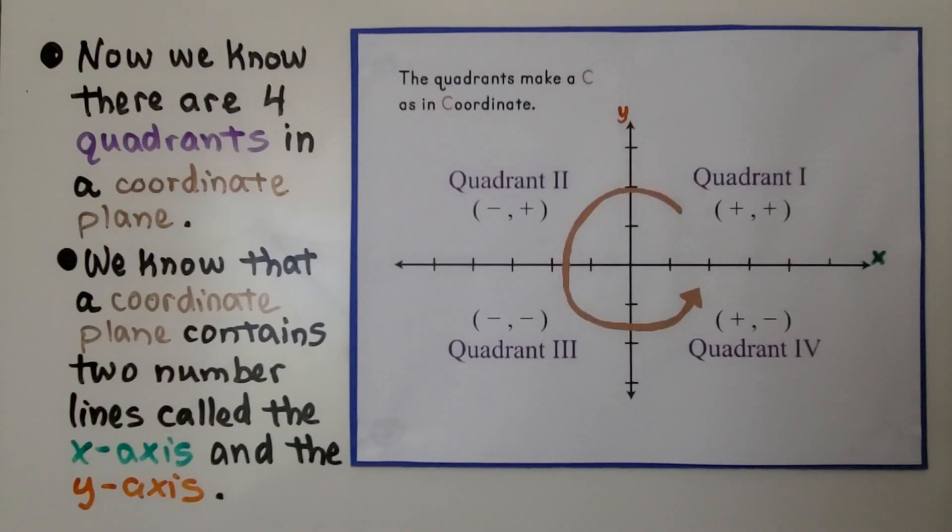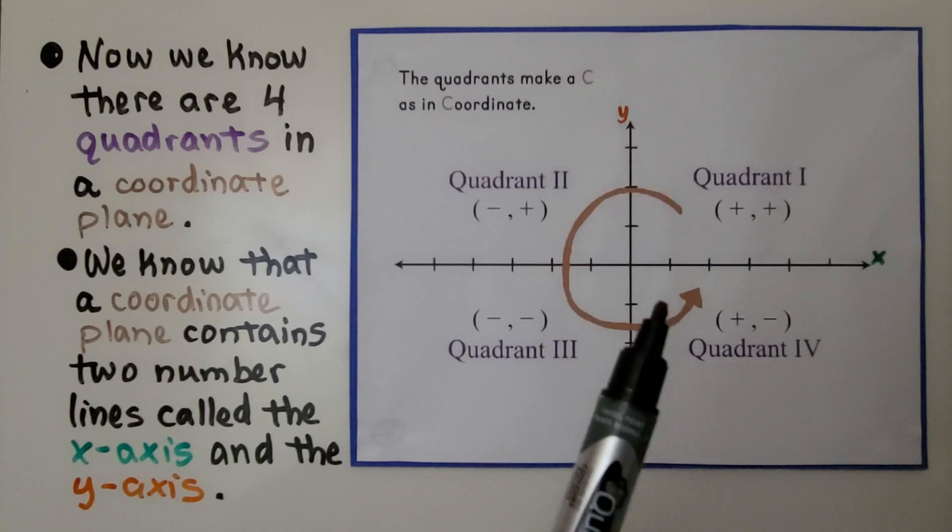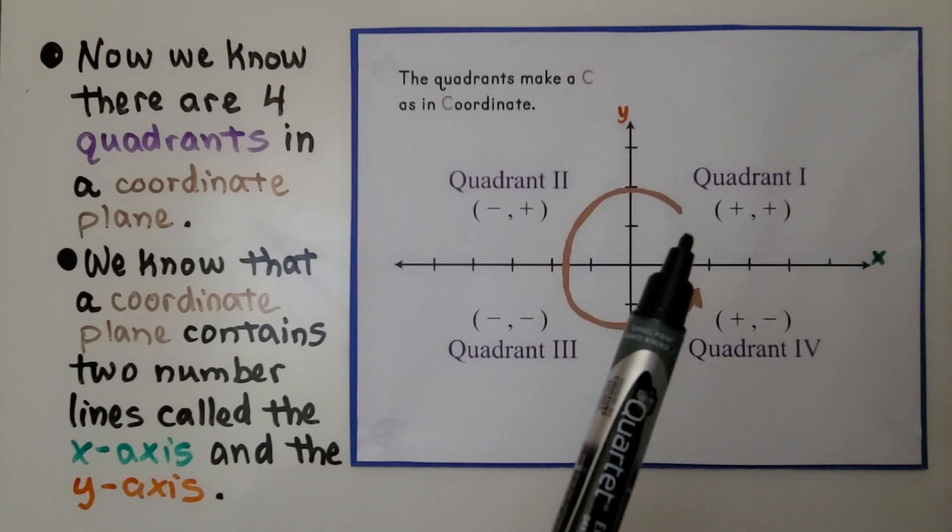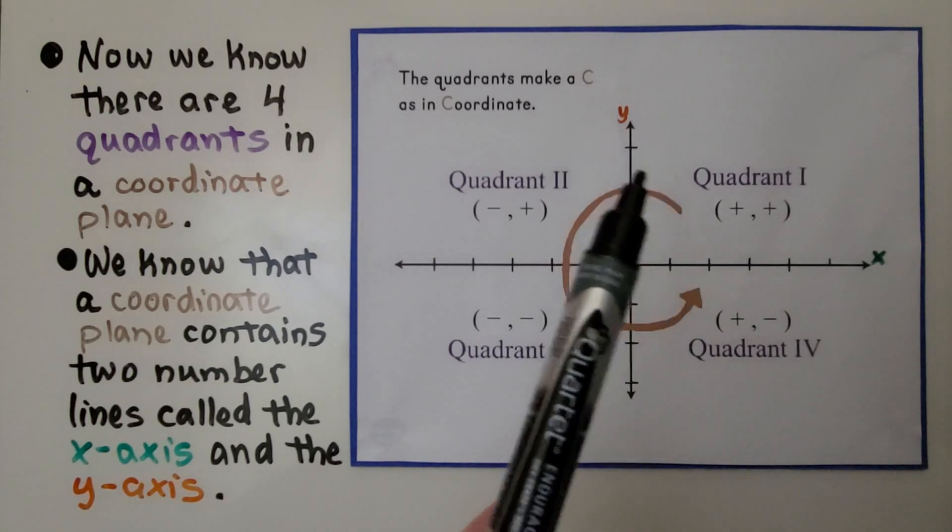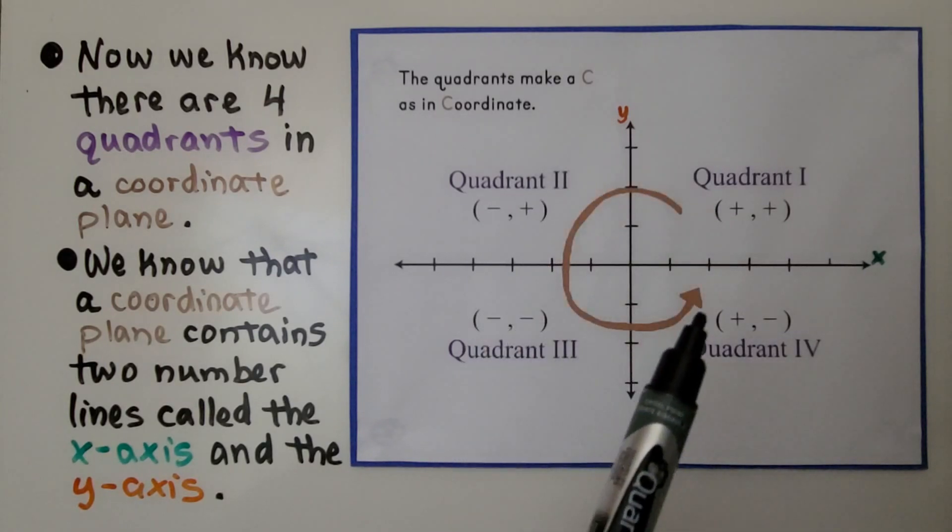Now we know there are four quadrants in the coordinate plane. We know that a coordinate plane contains two number lines called the x-axis and y-axis. And remember from the last video, we know what number quadrant it is by making the letter C for coordinate. We go one, two, three, four.